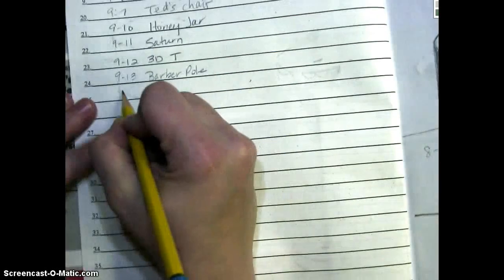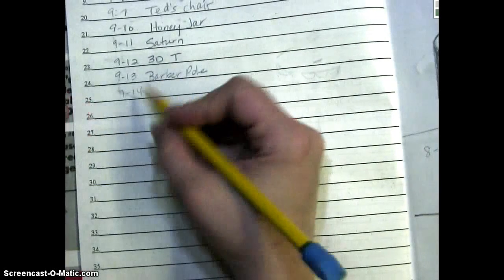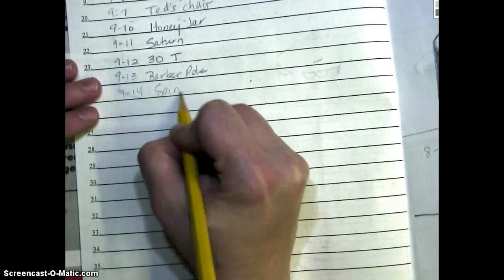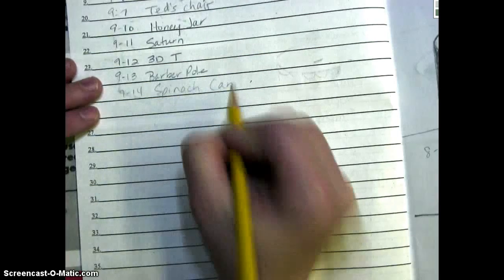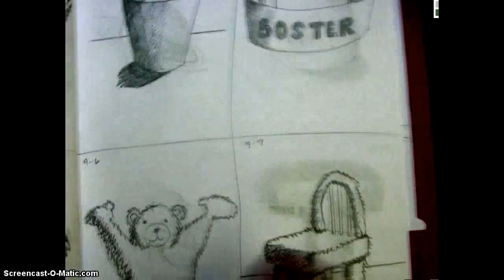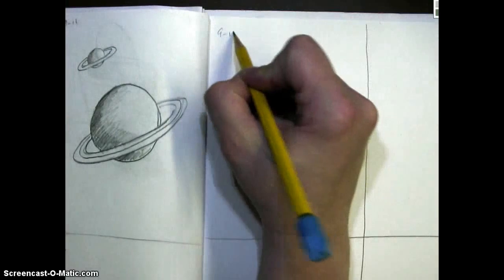Today is September the 14th, 9-14, and our title is Spinach Can. Let's go ahead and get our book opened up here. Looks like I'm out of room. I have to go to the next page. So what I need to do is I need to divide it in half vertically, divide it in half horizontally. So I have four squares. Don't forget the date.